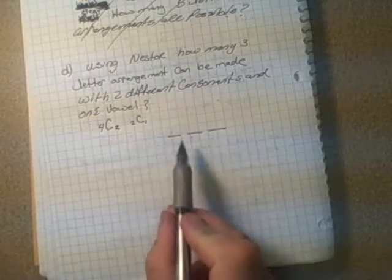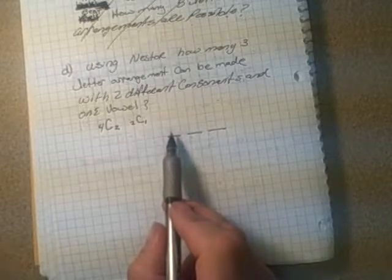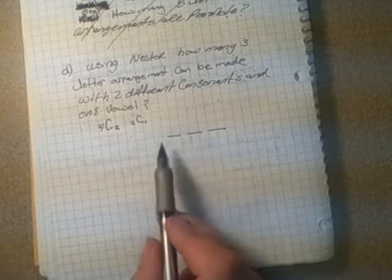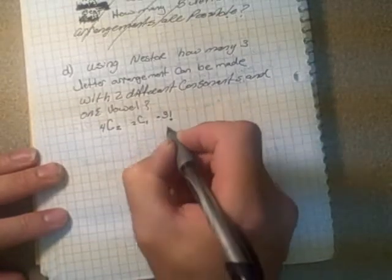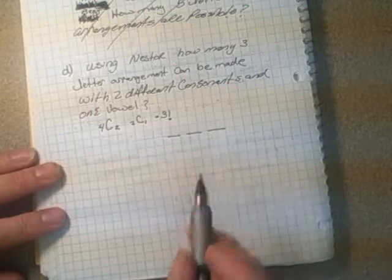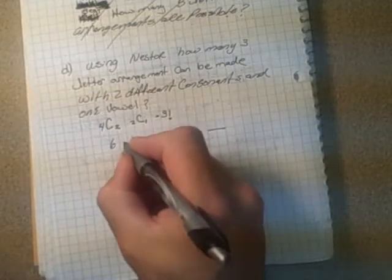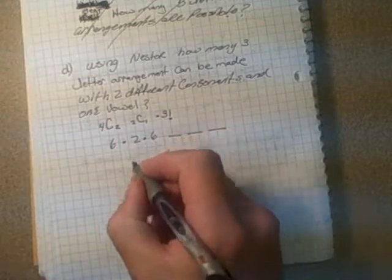Now we know that we have two consonants and one vowel, but there's still a number of ways that we can arrange those two consonants and one vowel. We still have to multiply that by three factorial because we had two consonants and one vowel, but they still can be arranged in three times two times one different ways. So now we can plug that all in. 4C2 and 2C1. 2 factorial over 1 factorial is 2, and 3 factorial is 3 times 2 times 1, which is 6. So that's 72 ways.